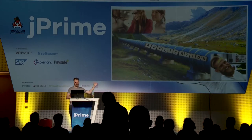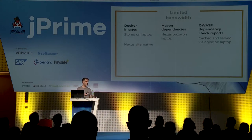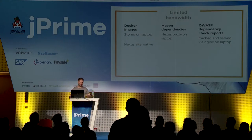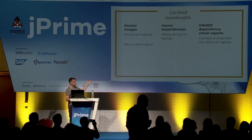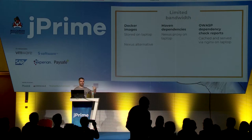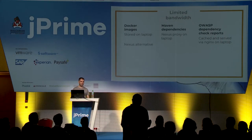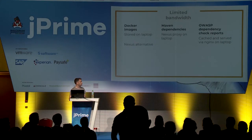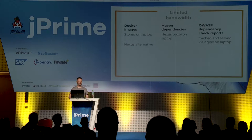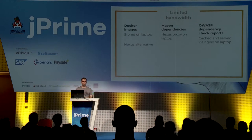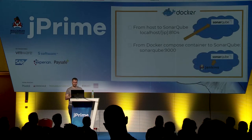I built almost everything from scratch except for three things, because we're on conference Wi-Fi and I cannot really trust the internet, so I'm working offline. I cached the Docker images — just the plain images, not the configuration, which I'll do live. I cached the Maven dependencies because Maven loads a lot of dependencies and over Wi-Fi that's probably not a good idea. For the OWASP dependency check, which checks Maven dependencies for known vulnerabilities, the reports are a couple of gigabytes, so I cached those as well.